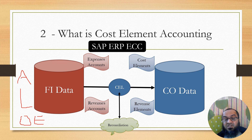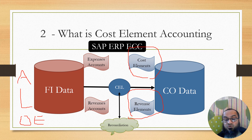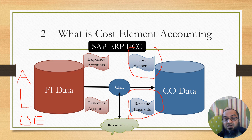When expense accounts were imported into Controlling, they were known as cost elements, and when revenue accounts were imported into Controlling, they were known as revenue elements. So since there were two different datasets, there were two different terms. For example, a rent expense is an expense account in Financial Accounting, but it is called a cost element when discussed in the Controlling module.